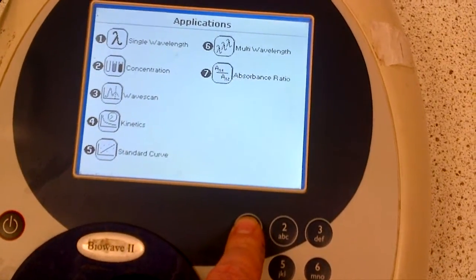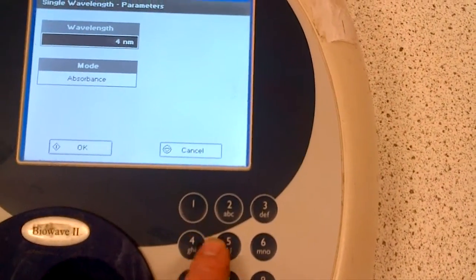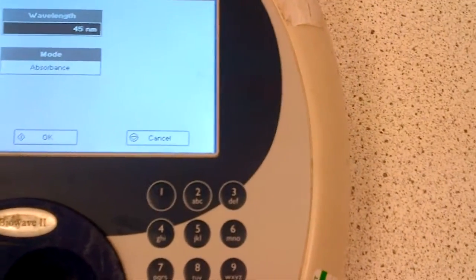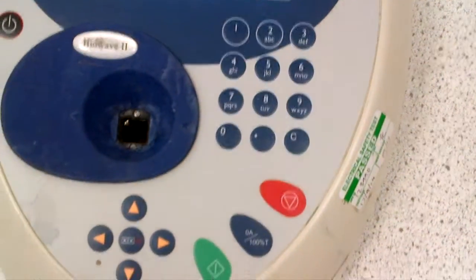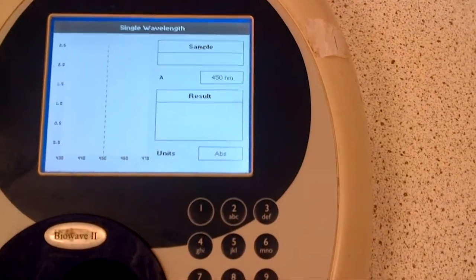So we press 1 on this keypad. If we're happy with a wavelength of 450, we can keep 450 in place. So put 450 and then press the green button, which represents OK. Press green for OK and we're now set to a wavelength.